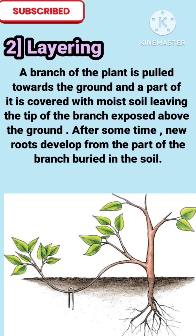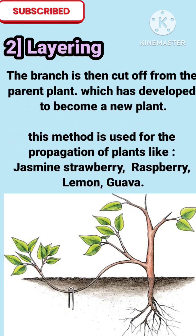A branch of the plant is pulled toward the ground and a part of it is covered with moist soil, leaving the tip of the branch exposed above the ground. After some time, new roots develop from the part of the branch buried in the soil. The branch is then cut off from the parent plant, which has developed to become a new plant.